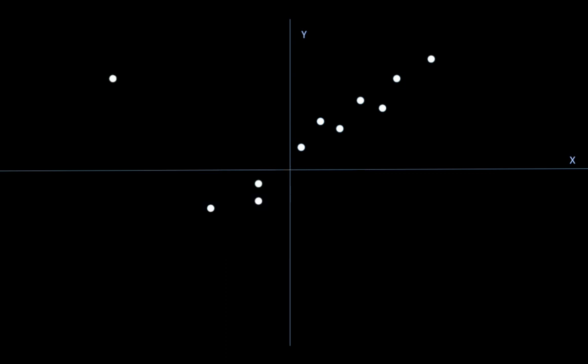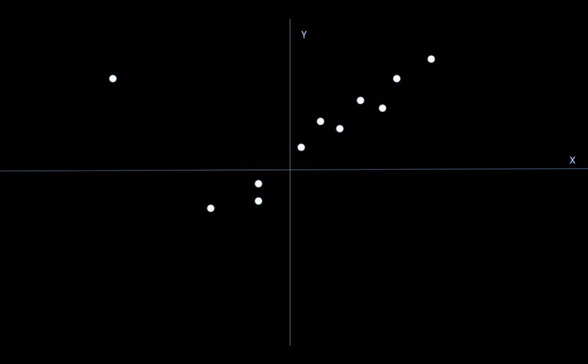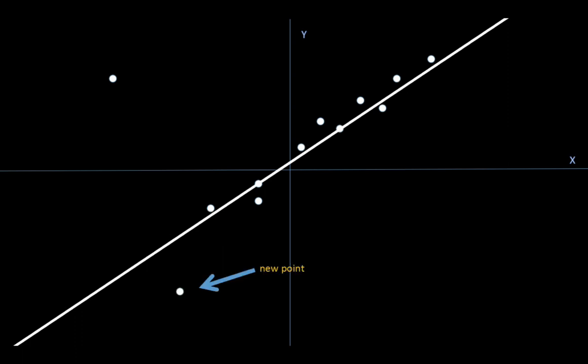Guys, starting we have to draw a random line — draw a random line so you can fit X to Y. Suppose I have drawn a line. The points fit very close and it is going to be a very close line, but starting we have a random line.